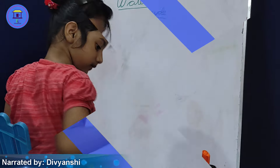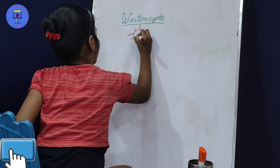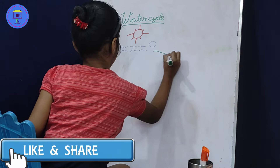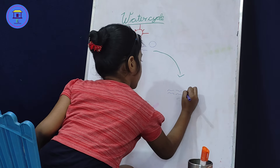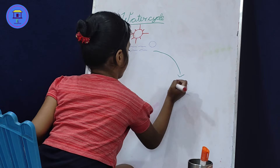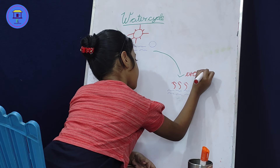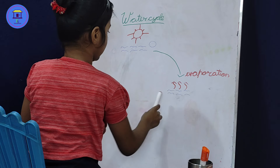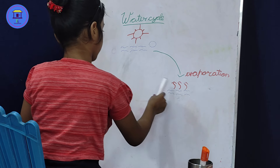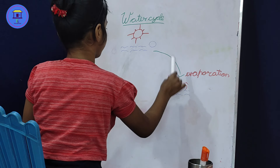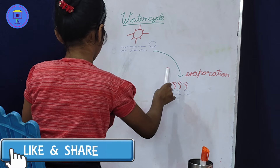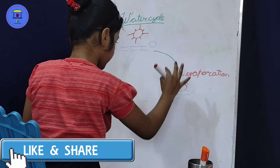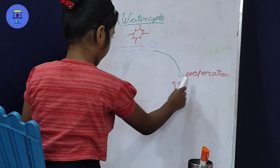Water cycle. The water becomes a part of the earth. Water in the earth is called water vapor. The warm water vapor rises up. The higher it goes, the cooler it becomes. This process is called evaporation.